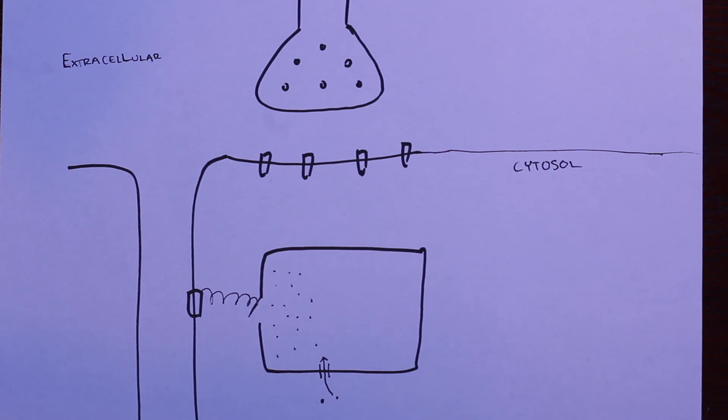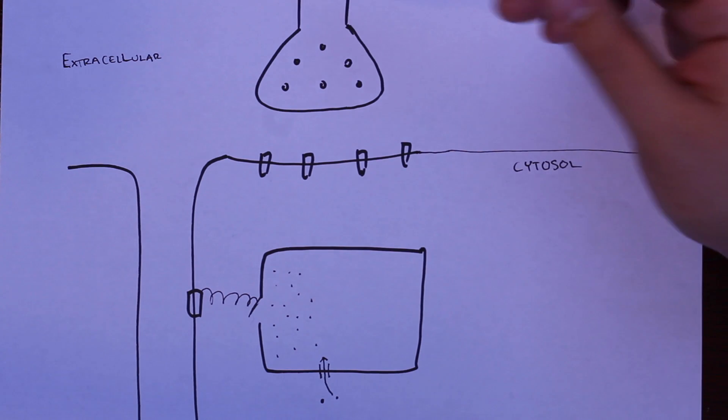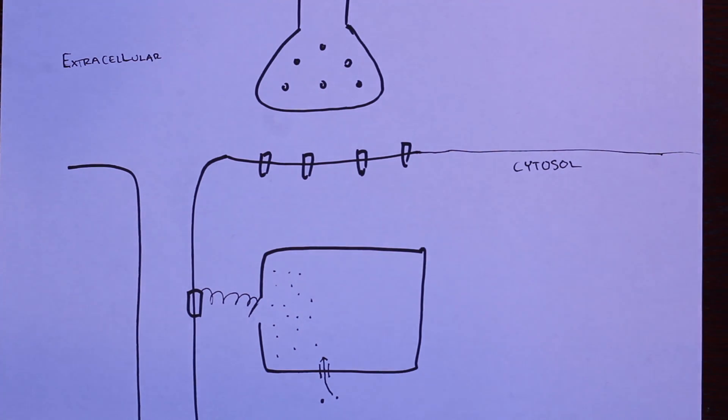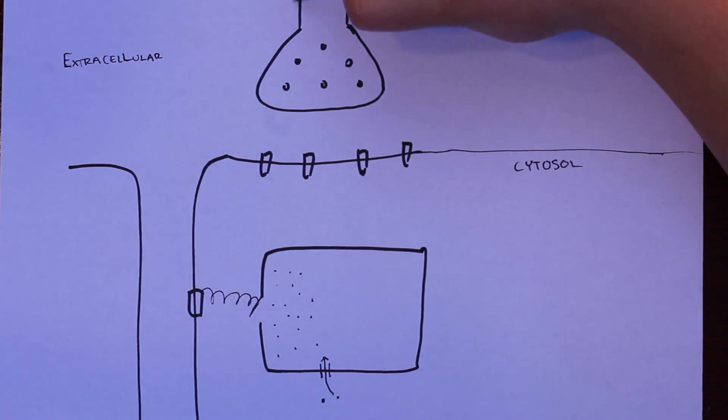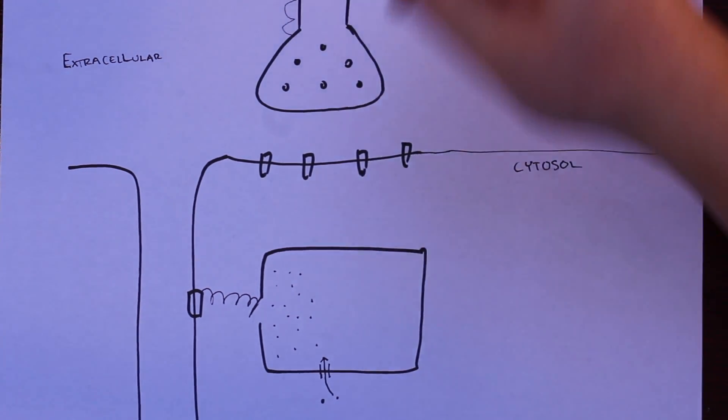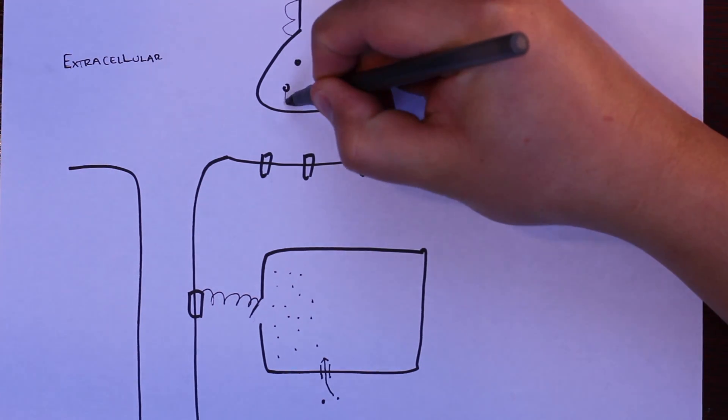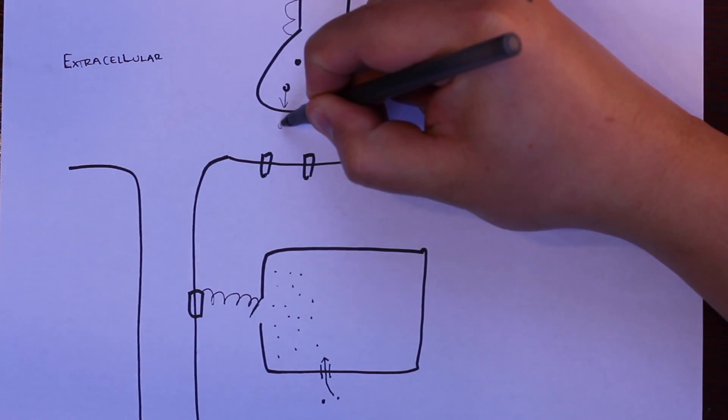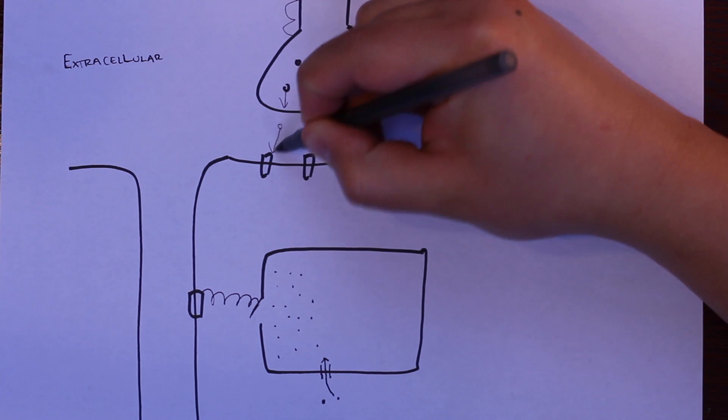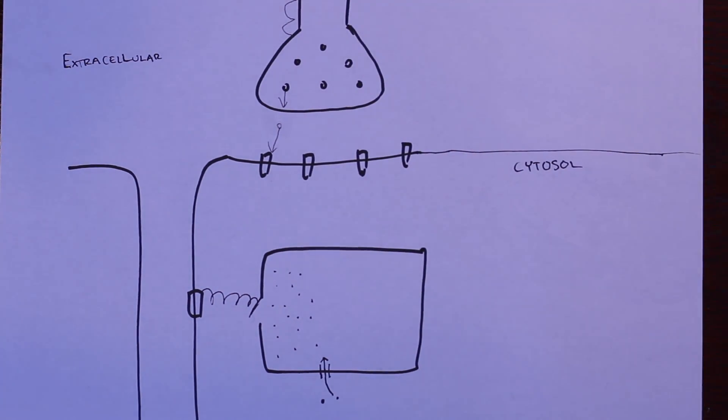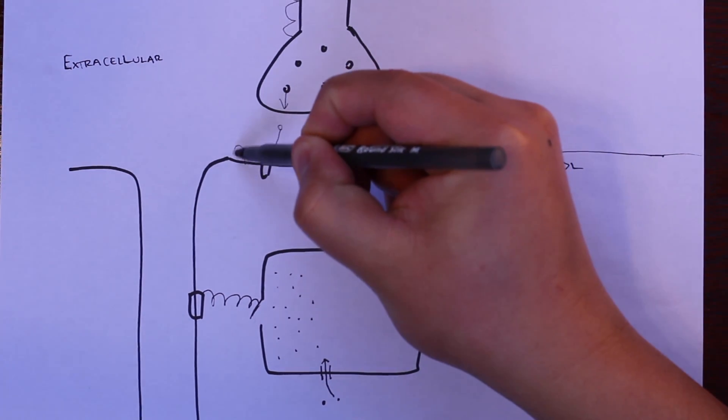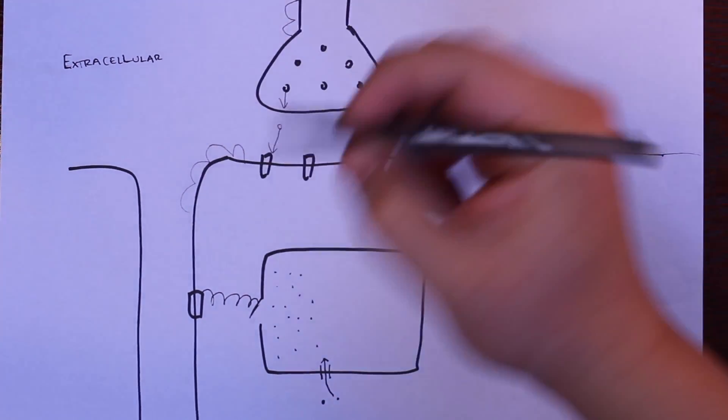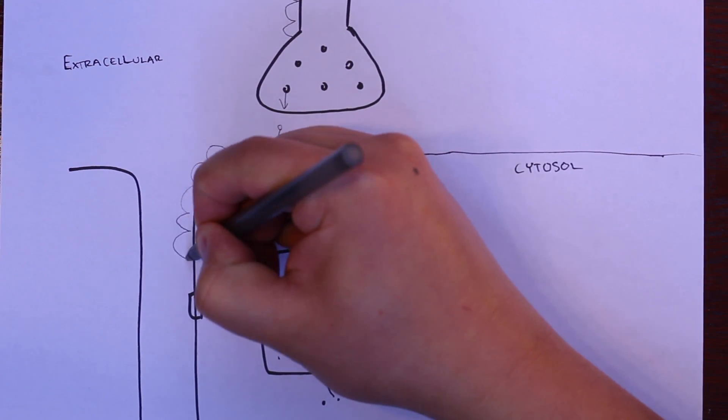We want to talk about what happens when an action potential comes down from the neuron and affects the muscle. Here we have an action potential coming down to the terminal button, which causes these vesicles to be exocytosed into the synapse. Once in the synapse, acetylcholine can then bind our ligand-gated ion channels and cause another action potential to propagate down the T-tubule.